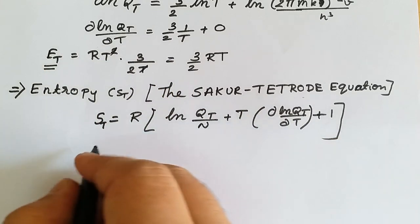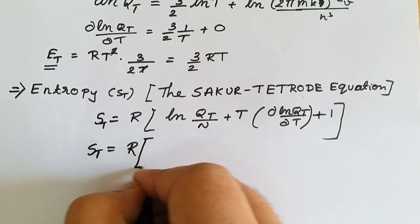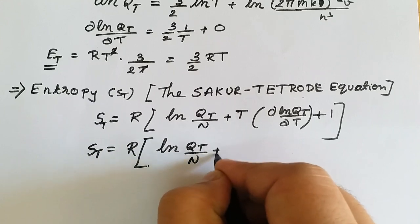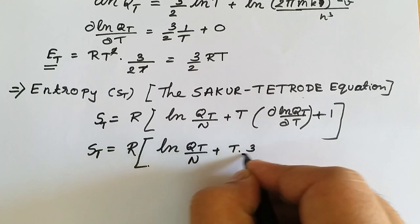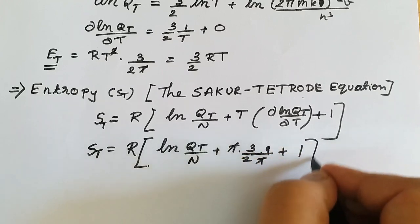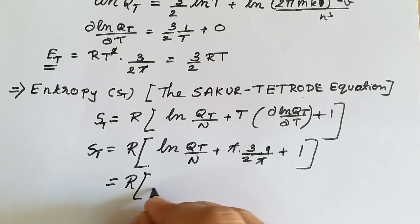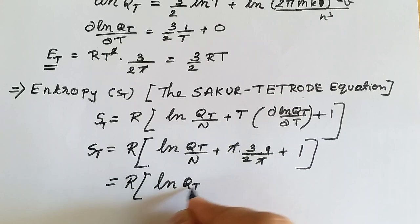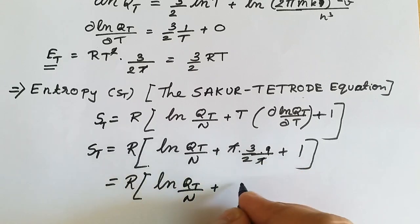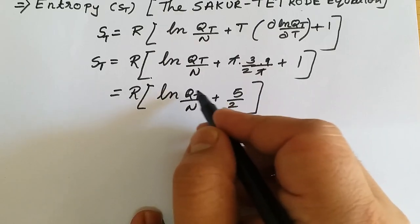Substituting, our equation becomes S_t = R [ln(q_t/N) + T × (3/2T) + 1]. The T terms cancel, leaving R [ln(q_t/N) + 3/2 + 1], which simplifies to R [ln(q_t/N) + 5/2].